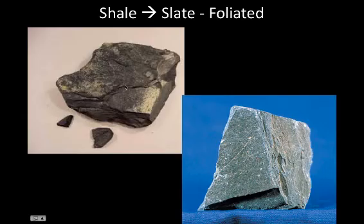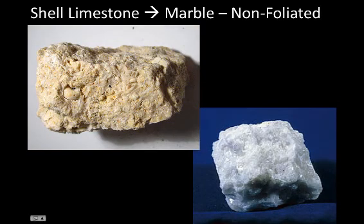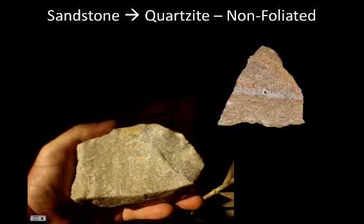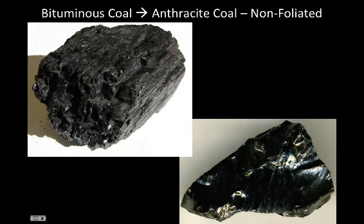Shale is kind of muddy and very loose — easy to pull apart — while slate is a very tough and compact rock; it's what your lab stations are made out of. Shell limestone, as the name implies, has a lot of shells in it, and after those shells are cooked they turn into marble, used for many statues and carvings — this is a non-foliated metamorphic rock. Sandstone, when cooked under higher temperatures rather than pressures, turns into the non-foliated rock quartzite, a great building stone. Finally, bituminous coal — the most common coal used in power plants — when put under high pressures and high temperatures turns into anthracite coal, another non-foliated metamorphic rock.